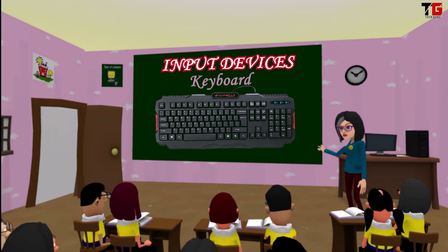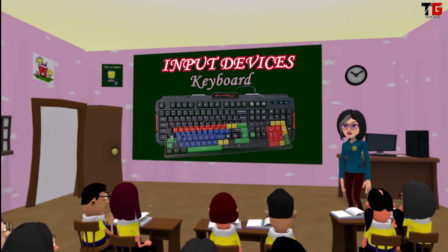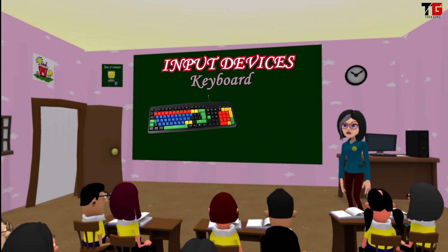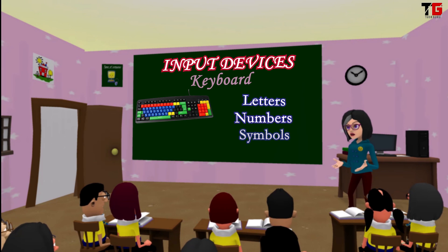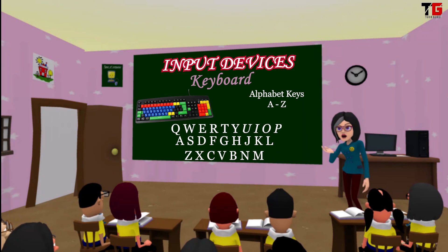First is keyboard. Keyboard has different buttons on it. These buttons are known as keys. It allows us to type letters, numbers and other symbols. It is the most used input device. Keyboard has different types of keys.